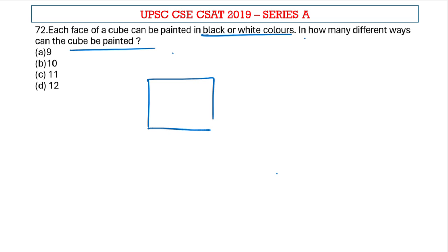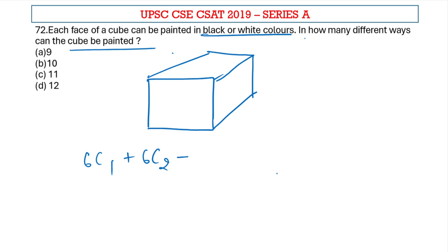Now generally you would think this is a combination sum, but it is a little bit tricky. If I'm using combination, I would say that the six faces — I can pick either one face to paint black, or two faces to paint black, three faces and so on. But this would give me an incorrect number of methods because I am not naming any side of the cube as such.